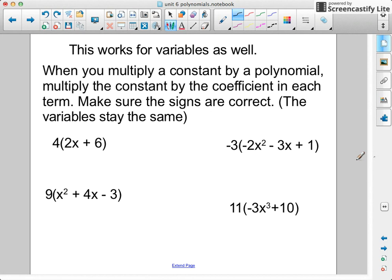This works for variables as well. When you multiply a constant by a polynomial, multiply the constant by the coefficient in each term. Make sure the signs are correct. The variables stay the same. We're not changing the variables because we're multiplying only by a constant number.